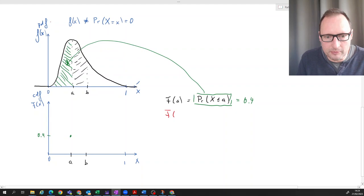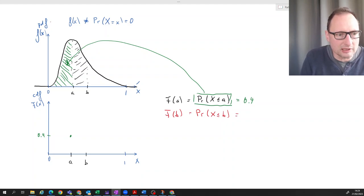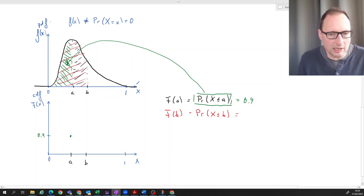The CDF at B is the same as the probability that x is smaller or equal to B. Well, let's make that now this entire area here. Everything up to here. And let's say again, that looks like 0.6.